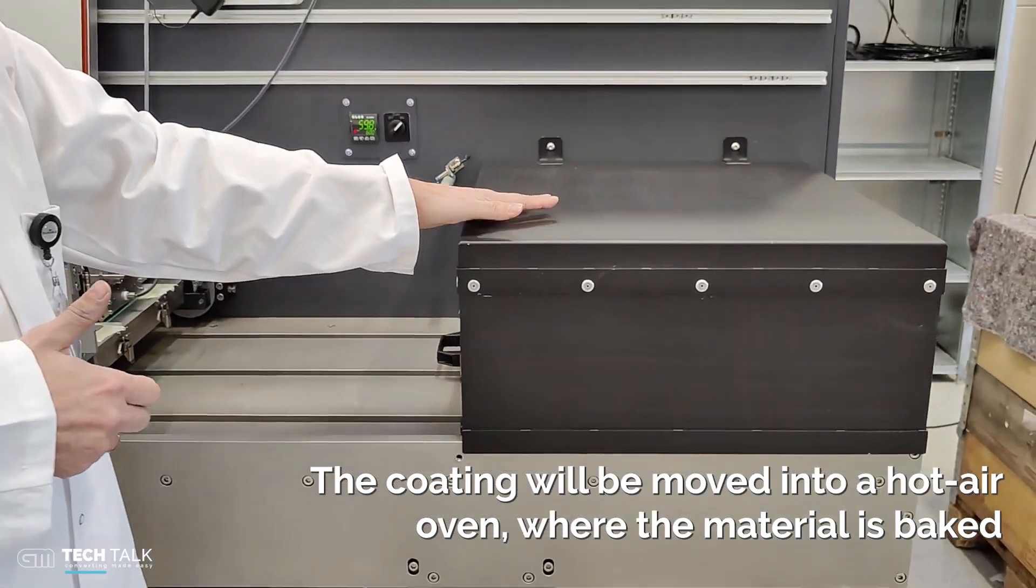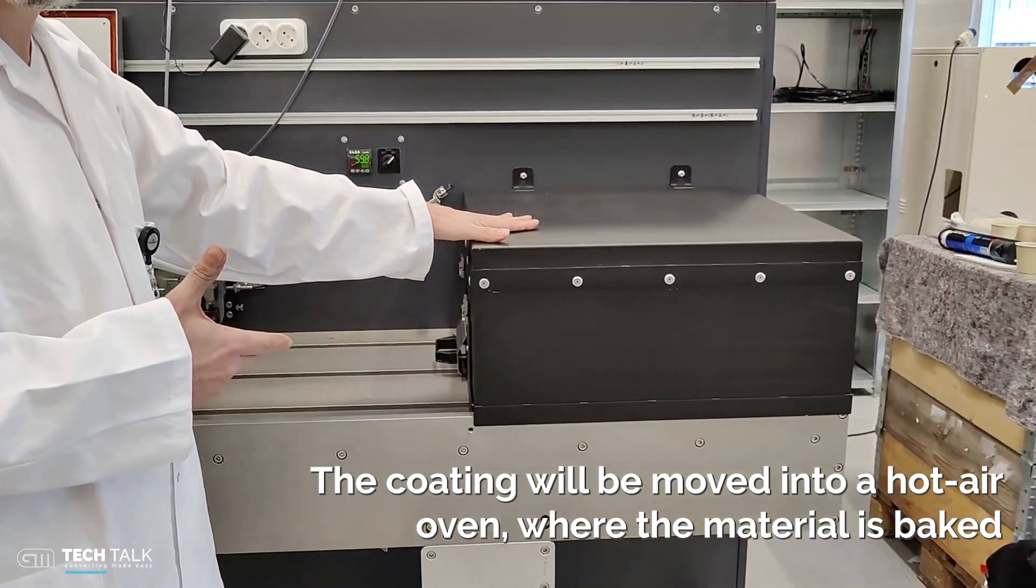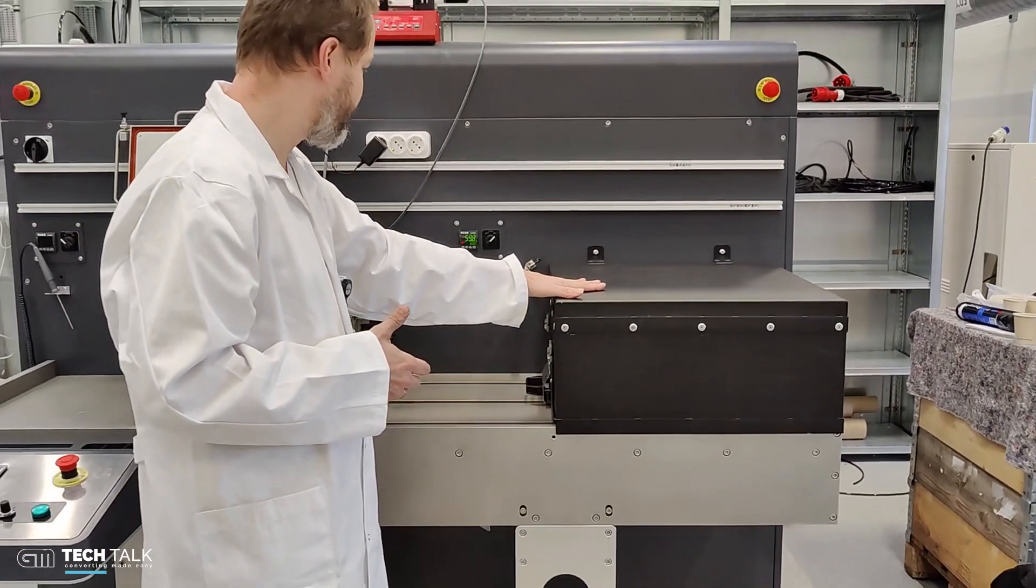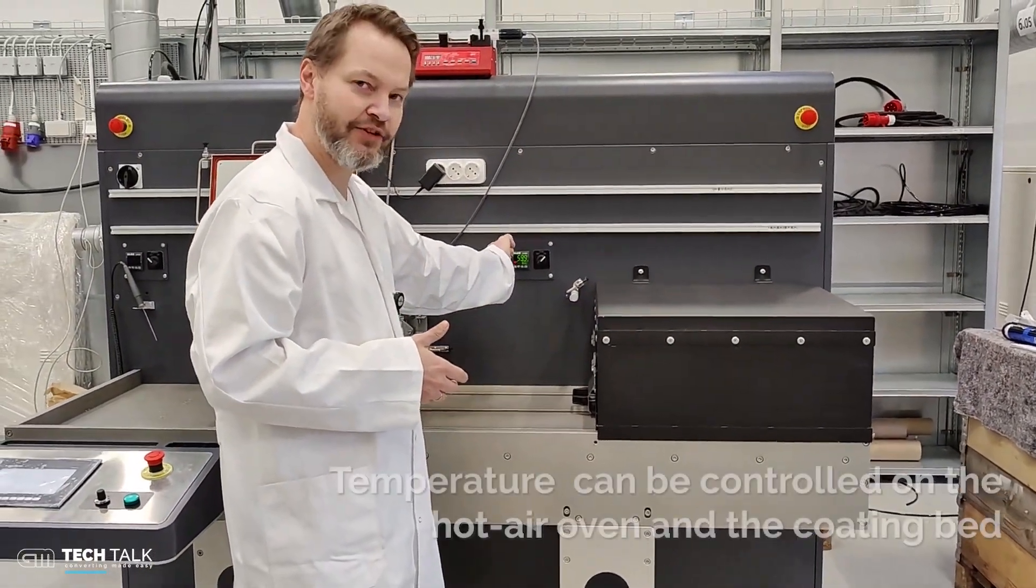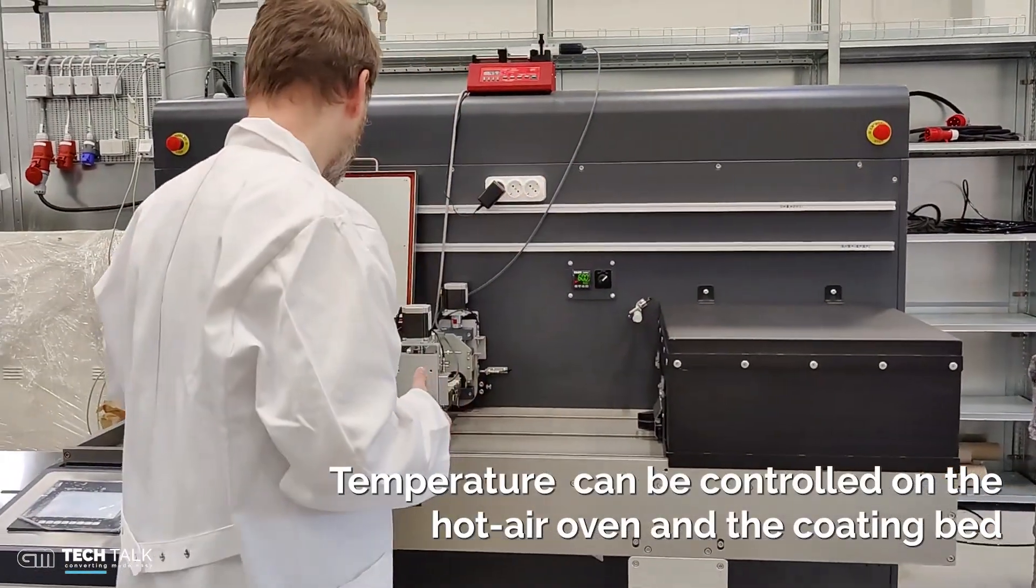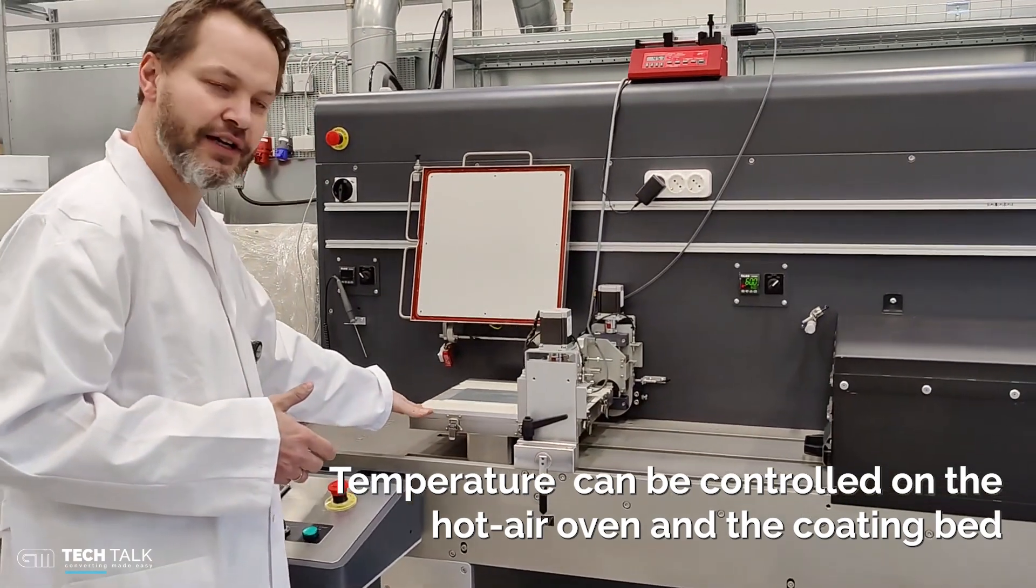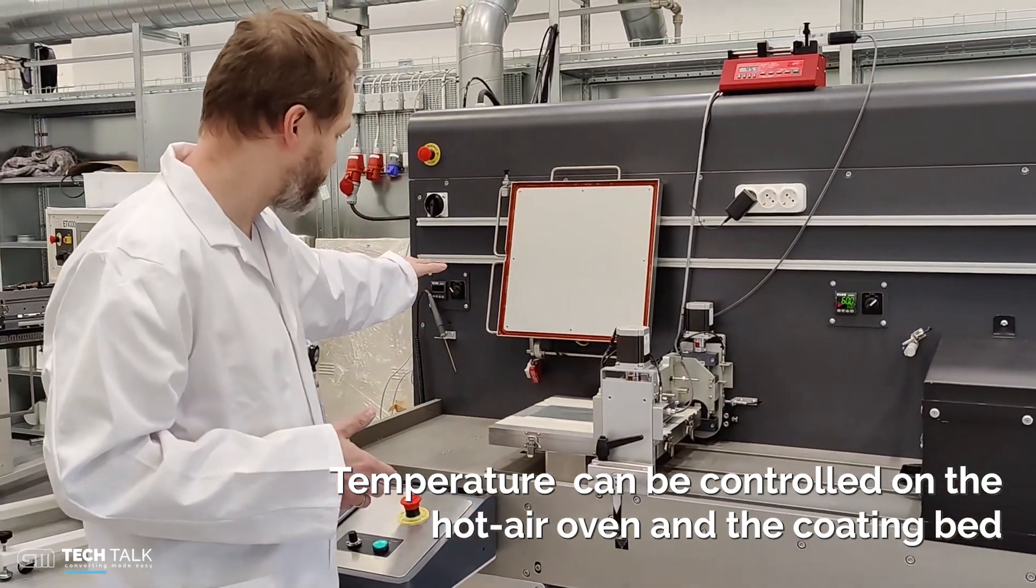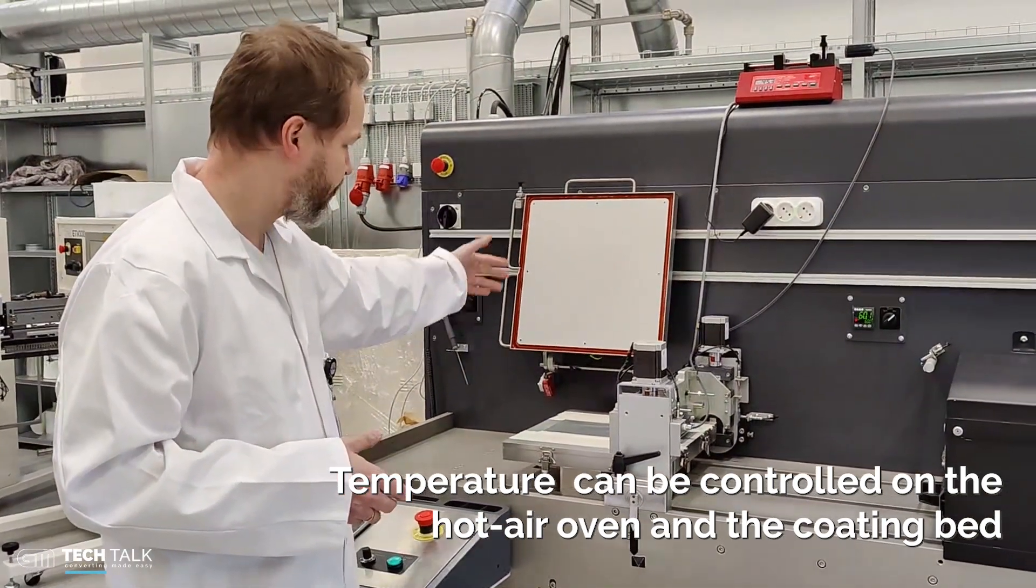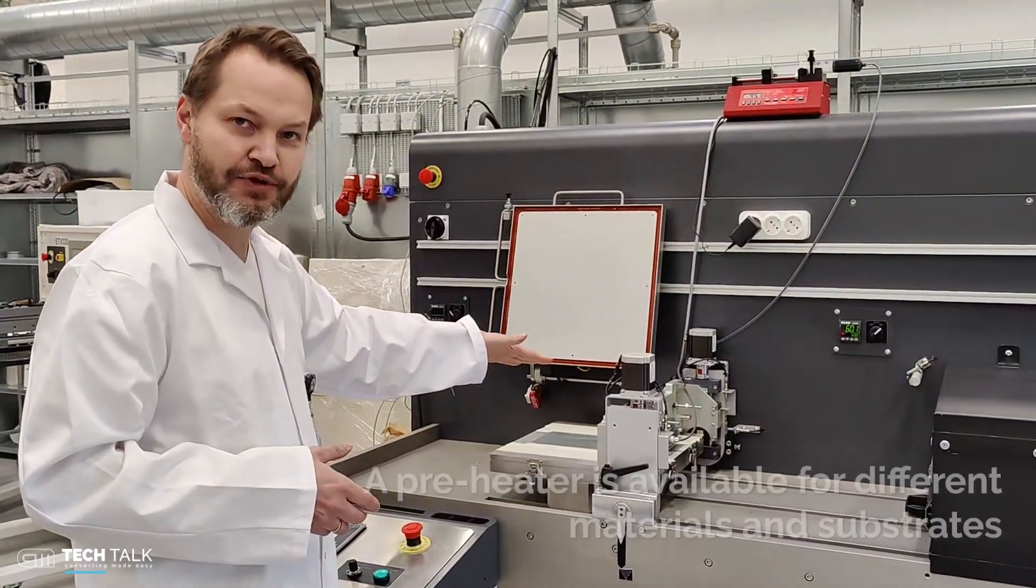The hot air oven will then bake the material for a certain amount of time. You can control the temperature of the hot air oven. You can also control the temperature of the coating bed. There's a small temperature regulator up here so we can even preheat the substrate.